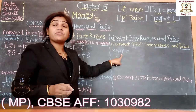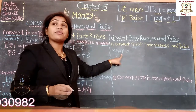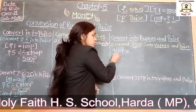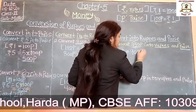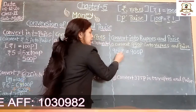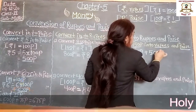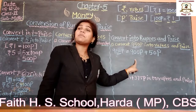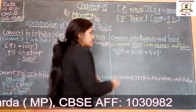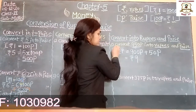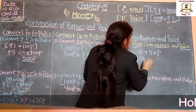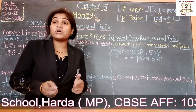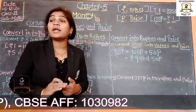So 9 rupees is equal to 900 paise — because 1 rupee equals 100 paise, 2 rupees equals 200 paise, and 9 rupees equals 900 paise. So we have 900 paise plus 50 paise on the right side of the dot. Together: rupees 9 and 50 paise.